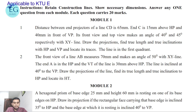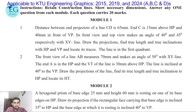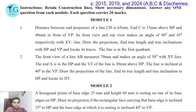The front view of a line AB measures 70 mm and makes an angle of 50 degrees with the XY line. End A is in the HP and the vertical trace of the line is 30 mm above the HP. The line is inclined at 40 degrees to the VP. Draw the projections of the line, find its true length and true inclination to HP, and locate its HT.